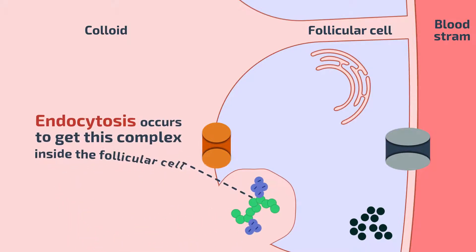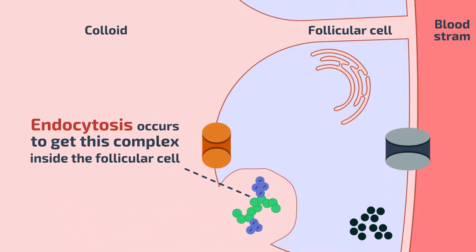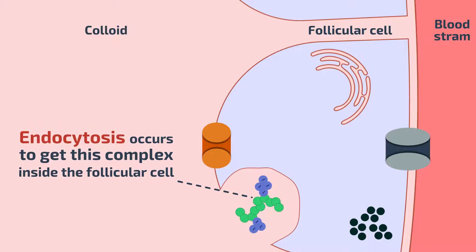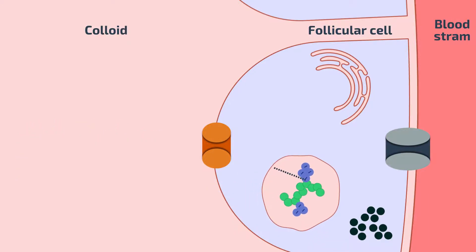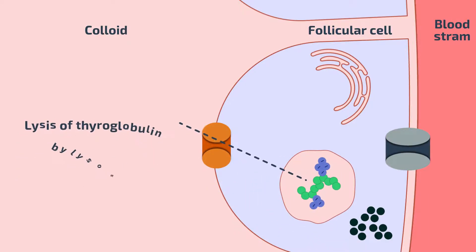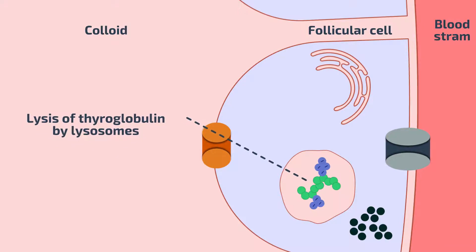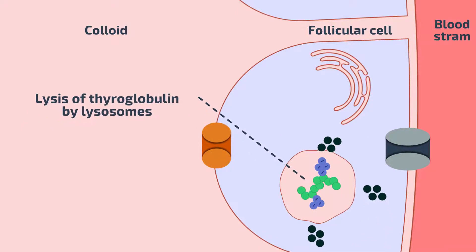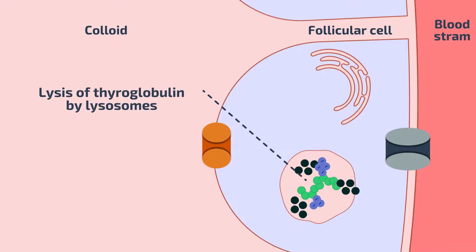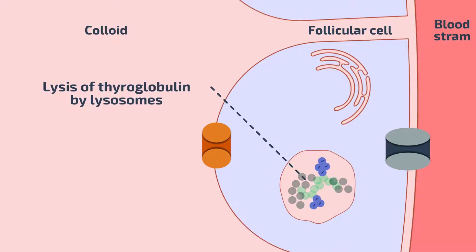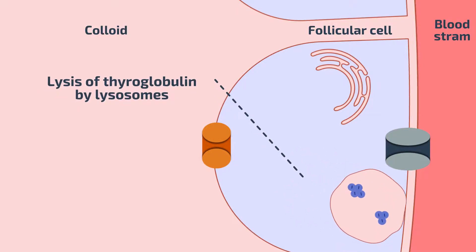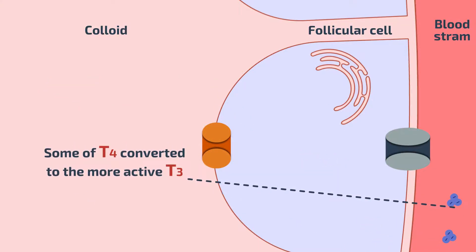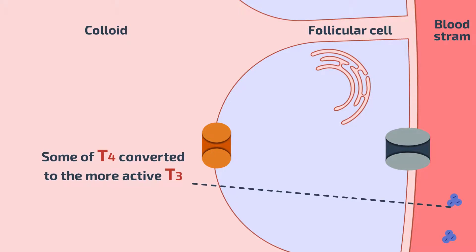The complex is then taken up by the follicular cells by endocytosis, where thyroglobulin is cleaved by lysosomes, freeing T3 and T4 to be released into the bloodstream. Some of T4 is converted to the more active form, T3.